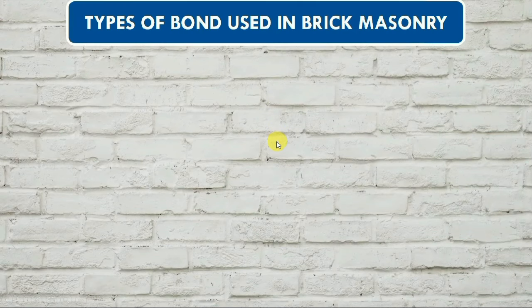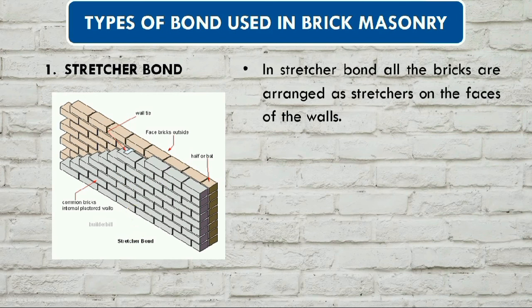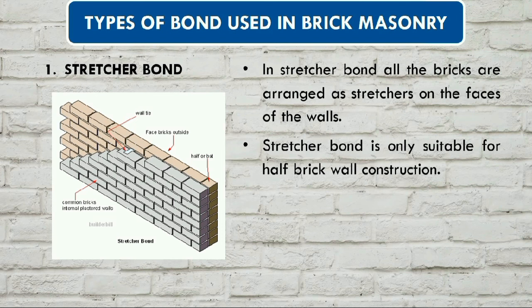Now you can use brick masonry with different bonds. The first is a stretcher bond. You can see on the wall there are common bricks, brick face, and half brick side. The stretcher bond is arranged accordingly along the wall. It is suitable for half-brick thickness walls, and it is necessary to keep the joints properly aligned.